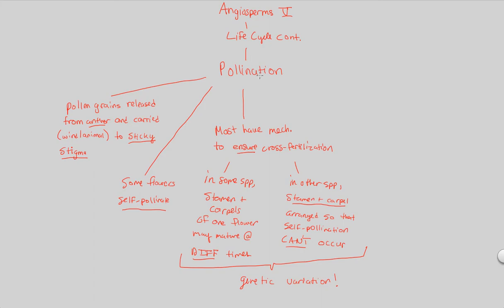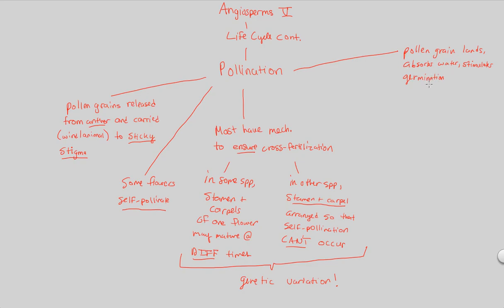Pollination comes first, so let's go over the steps. We have a pollen grain — that's the male gametophyte. That pollen grain lands at the sticky stigma region and absorbs water. The reason it absorbs water is because once water is absorbed, this stimulates germination. Germination is basically the start of growth and development, something important in the overall reproductive life cycle. So we start by landing, absorbing, and germinating.